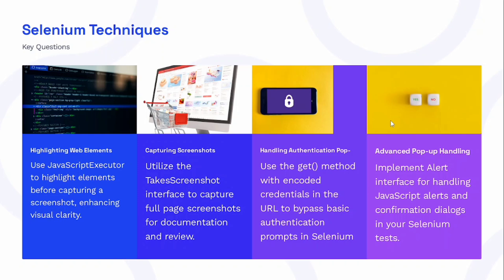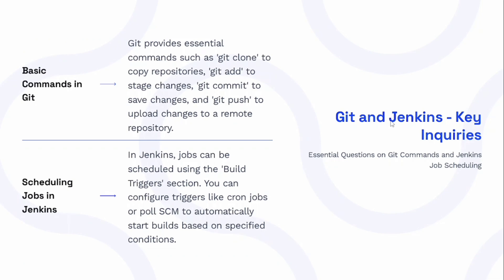The next set covers Git and Jenkins. For Git, we should be familiar with essential commands: git clone to copy repositories, git add for staging changes, git commit to save changes, and git push to upload changes to a remote repository. For scheduling jobs in Jenkins, jobs can be scheduled using the Build Trigger section. You can configure triggers like cron jobs or Poll SCM to automatically start builds based on specified conditions.